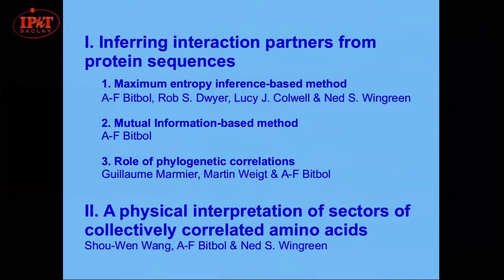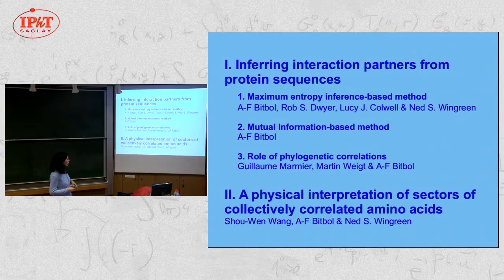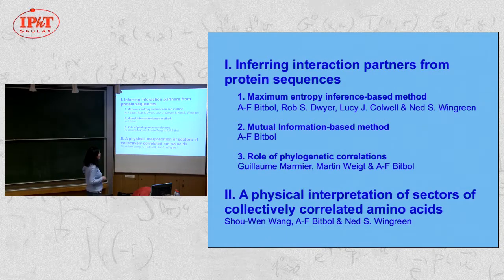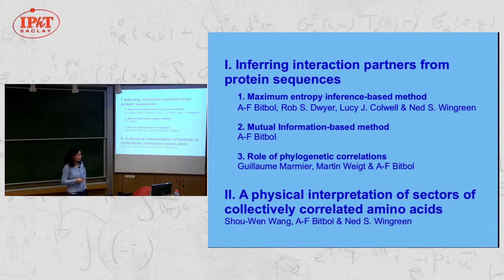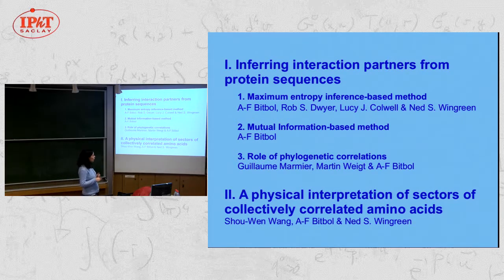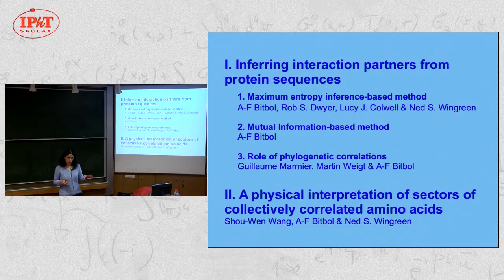This is a great opportunity for statistical physics and information theory-based methods to learn about proteins from sequences. This field is currently growing, and I'm going to present a very personal view of some directions I have contributed to. The first is about inferring interaction partners from protein sequences, using two methods based on maximum entropy and mutual information, and finally the role of correlations from the evolutionary history of proteins. I'll also have a shorter part on collective correlated groups of amino acids in protein sequences.